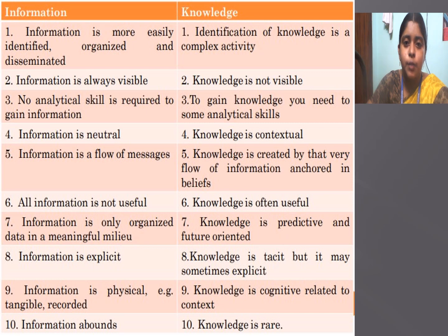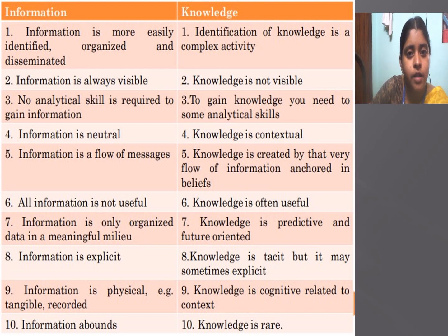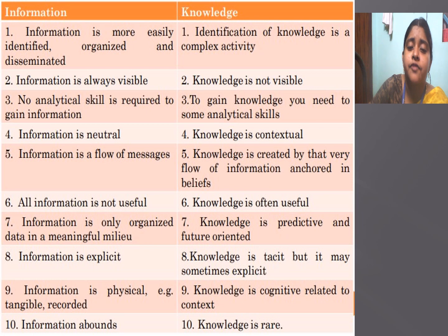Information is most easily acquired, identified, and organized. Information is easily visible, but identification of knowledge is a complex activity — it is not invisible. Information is neutral while knowledge is contextual. Not all information is useful, but knowledge is often useful.